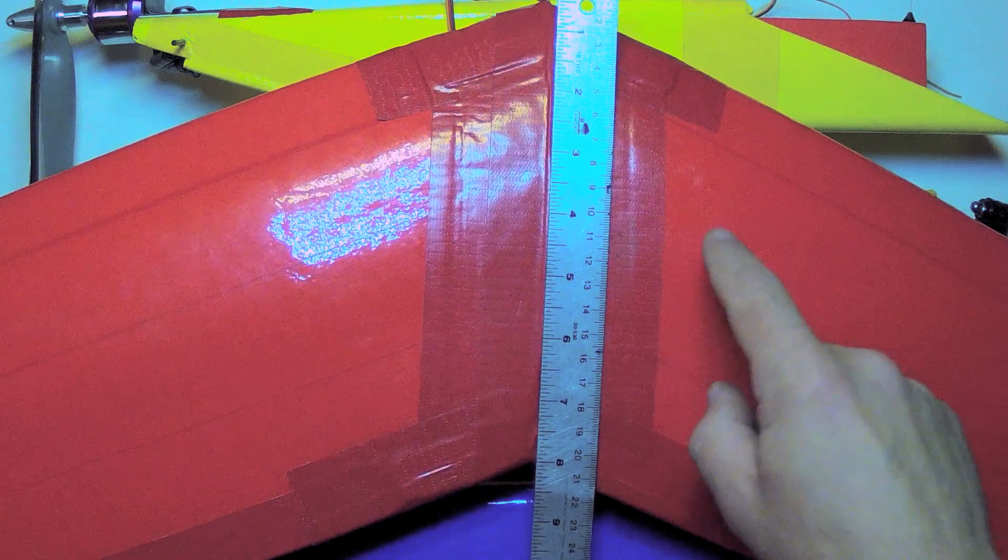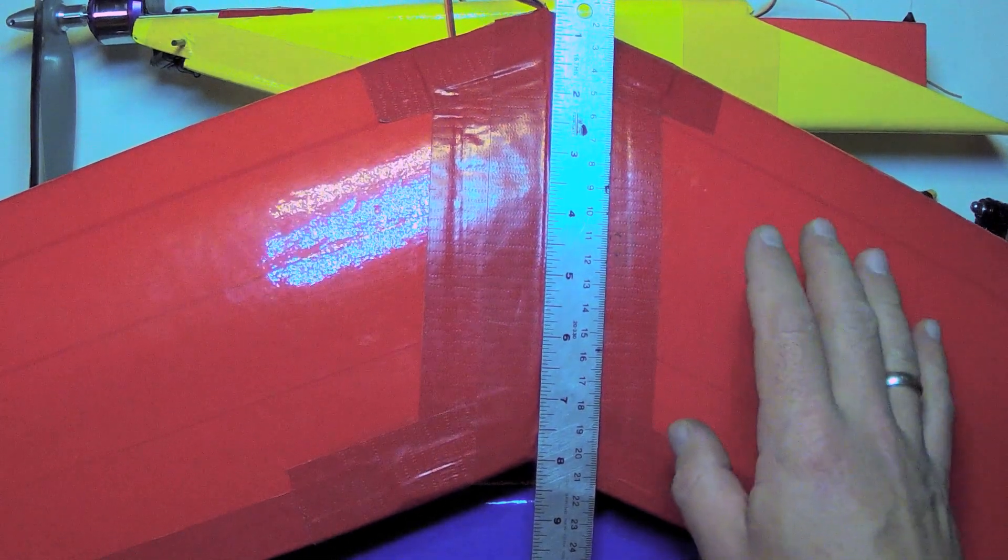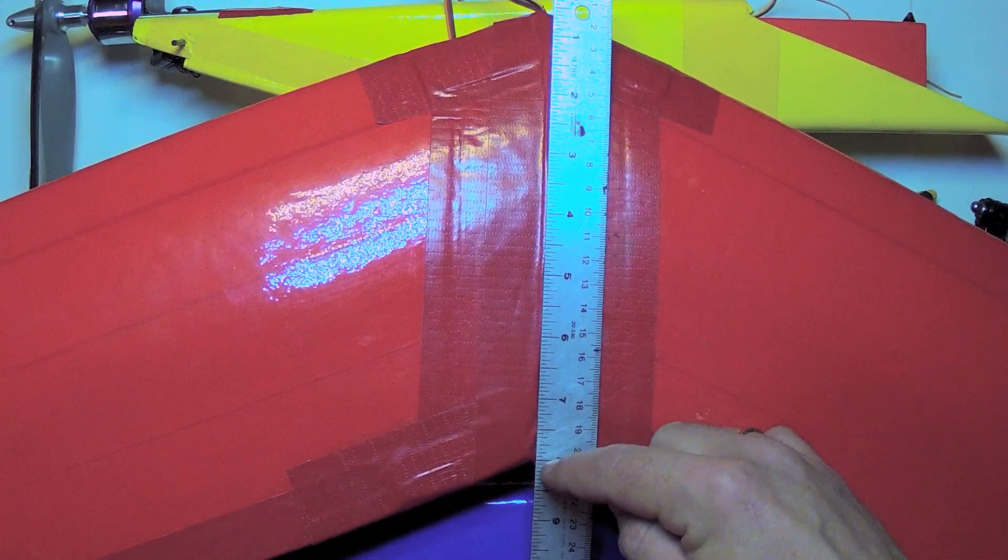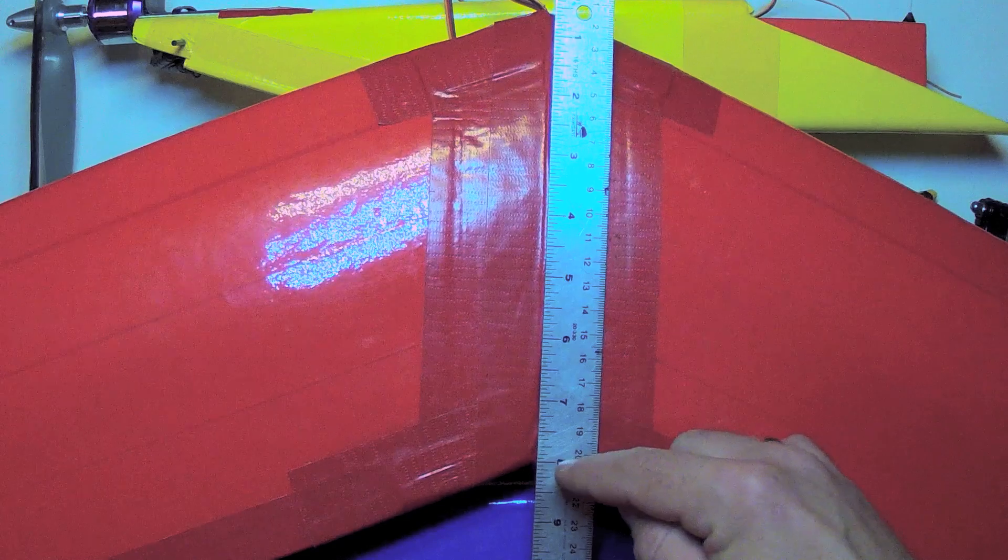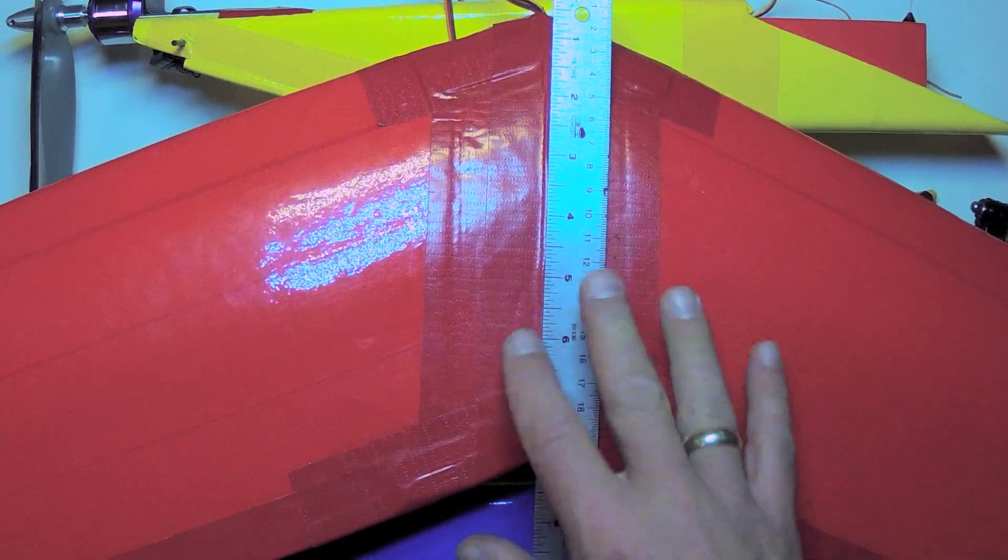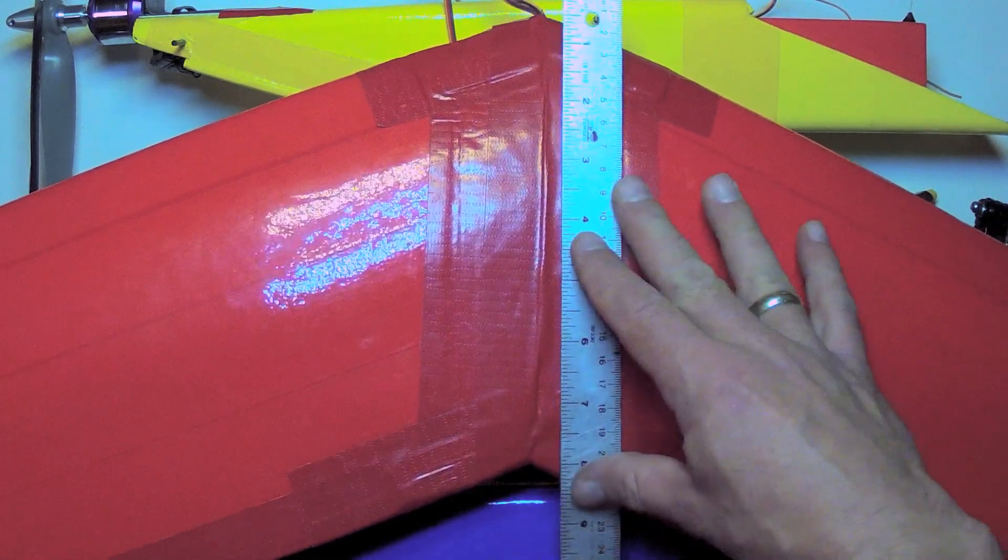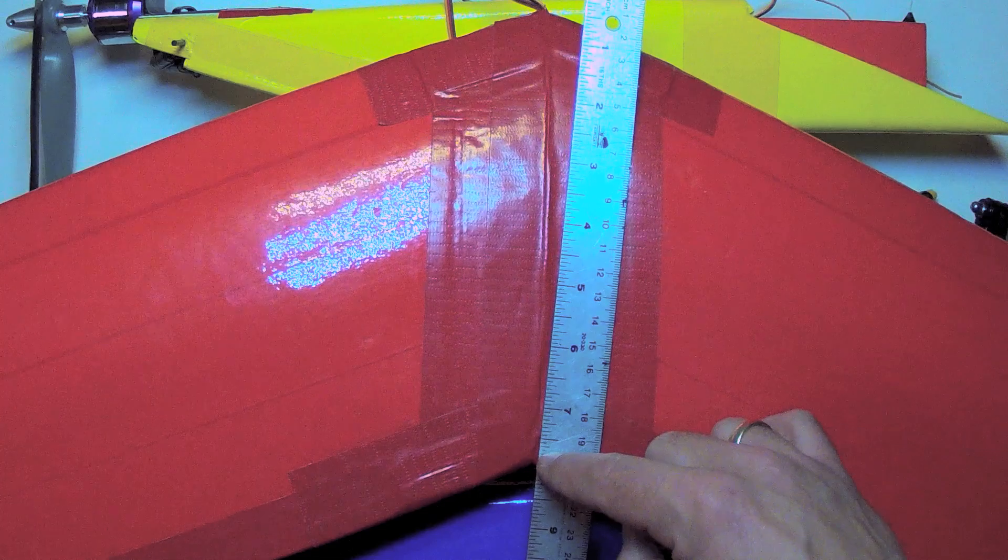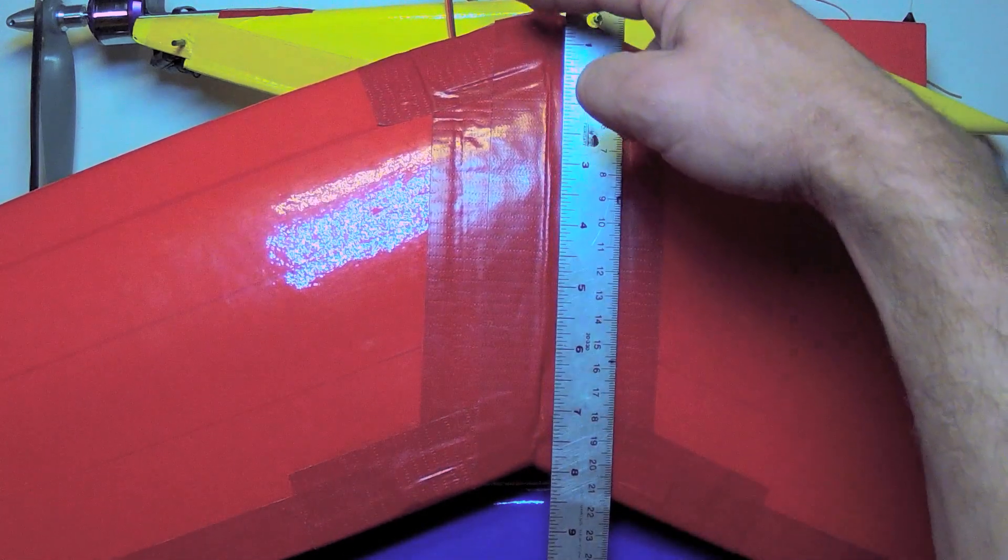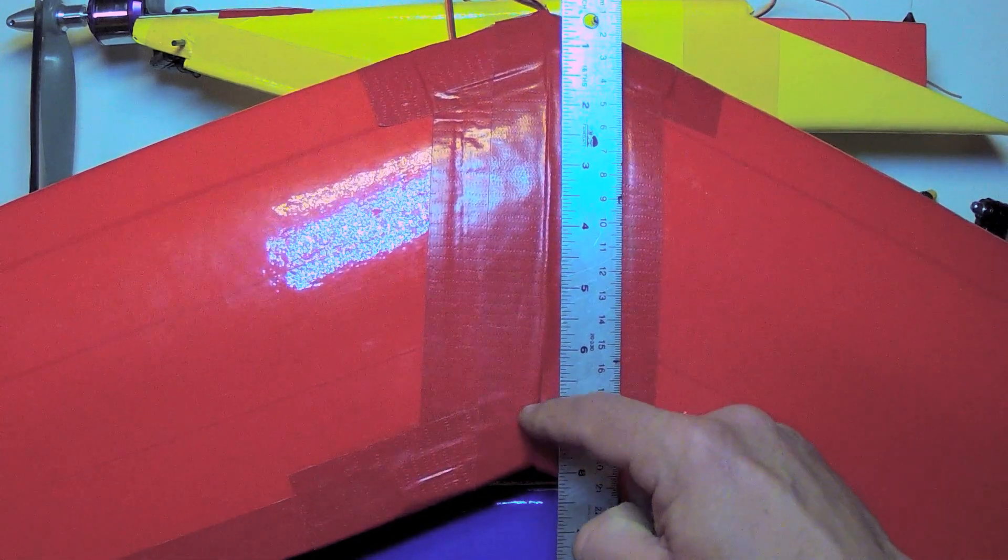The calculated center of gravity on the typical Synapse wing built exactly as demonstrated should be no further aft than 8 inches rear, which corresponds to the trailing edge of the wing joint. In reality I recommend making it about 7 inches aft of the leading edge, so 1 inch forward here. So this is your safe range.